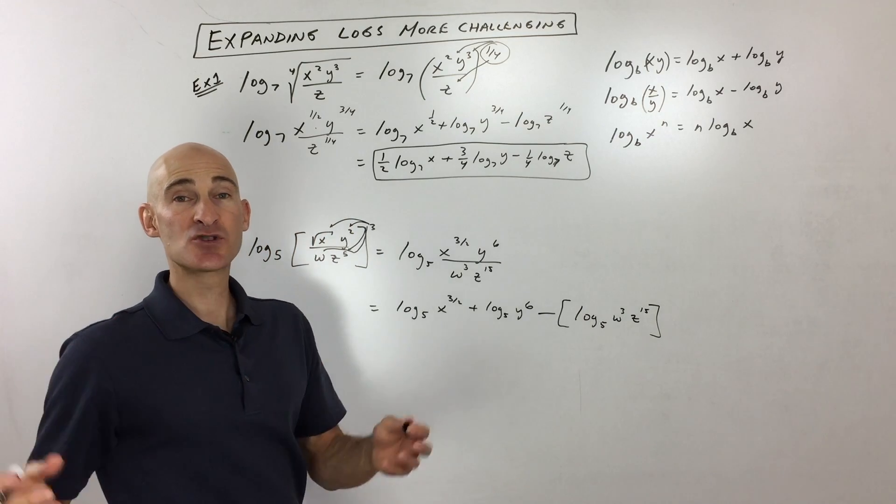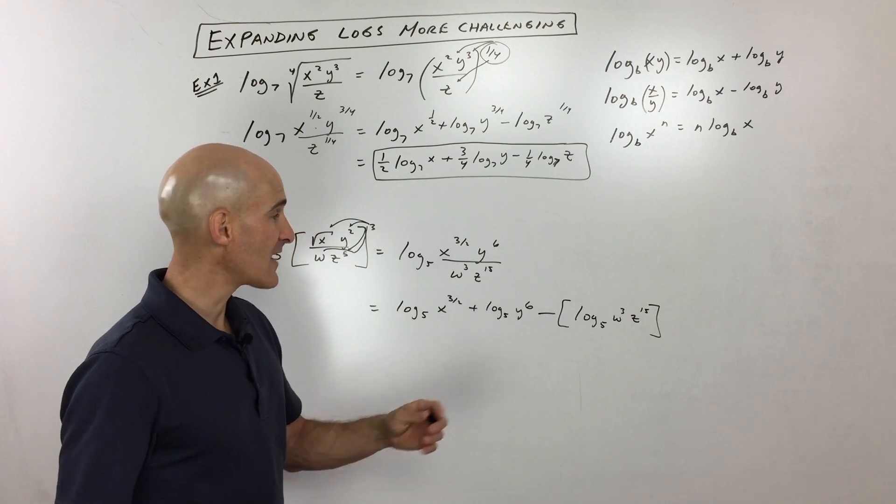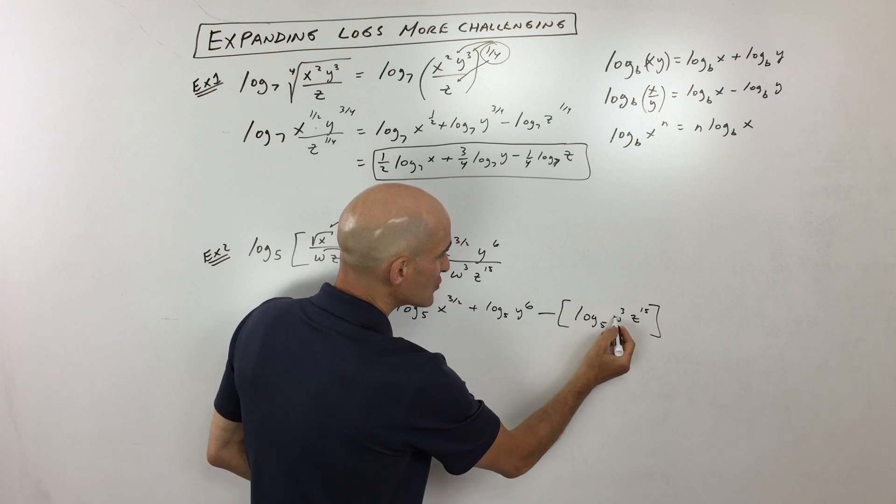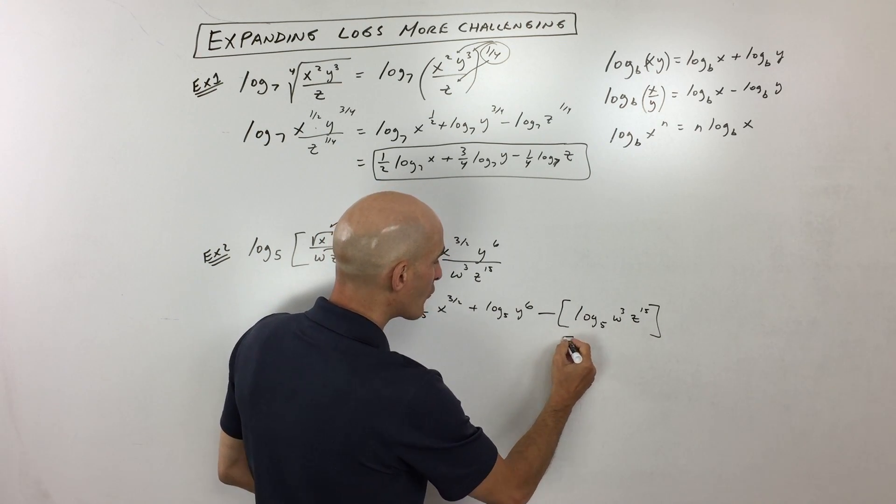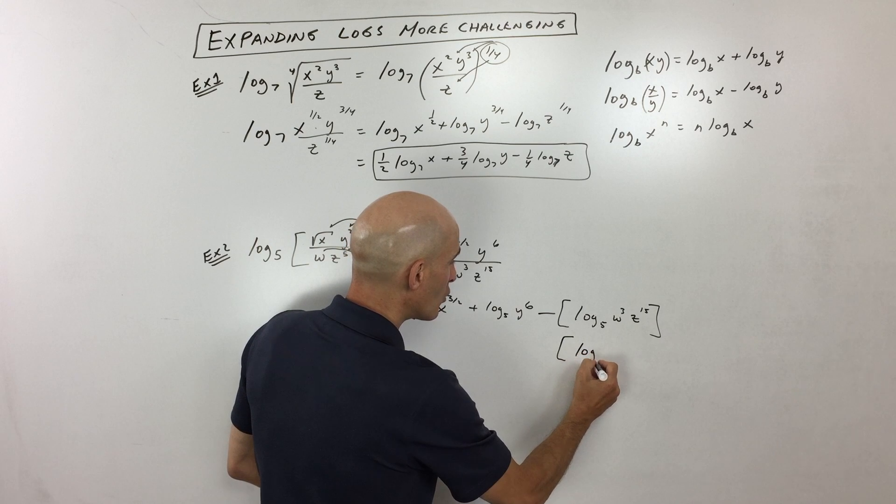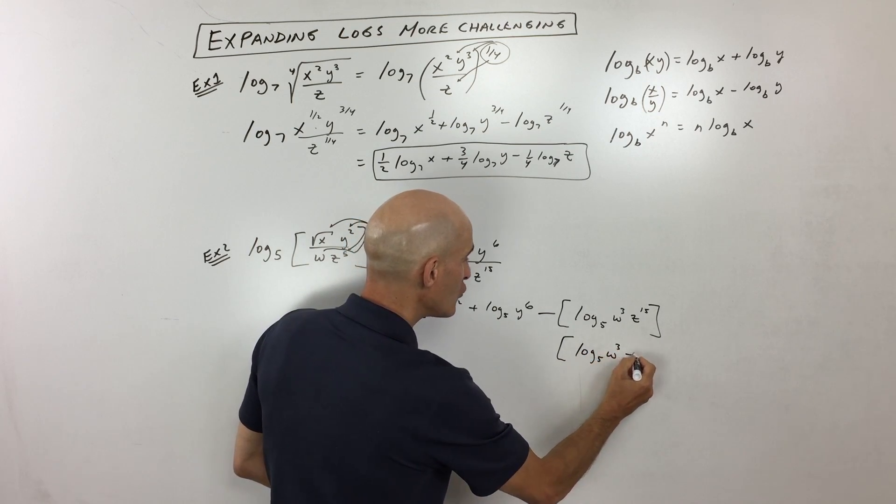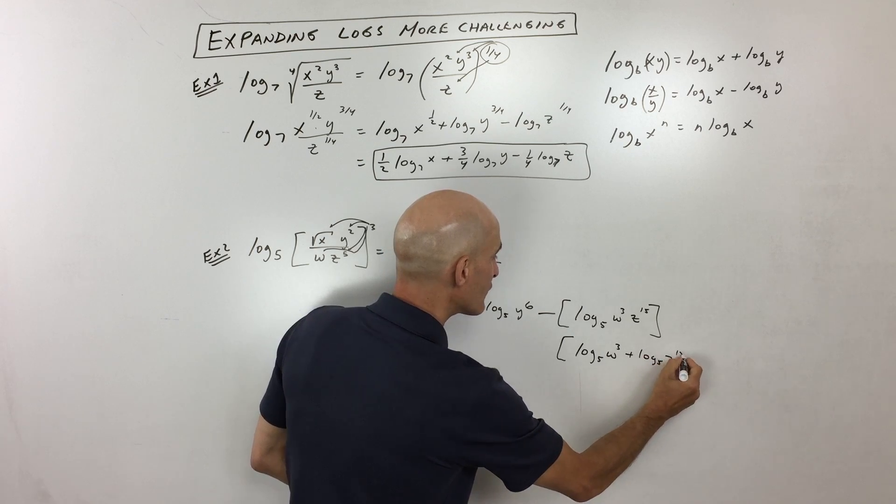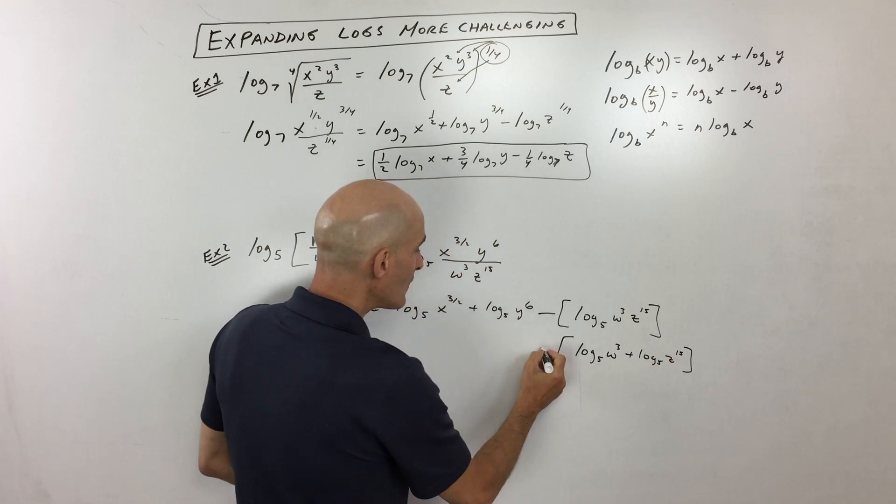So now you can do this, some students are really good. They can do this all in one step, but I'm just showing you step by step. Now notice how these are multiplied together, these two quantities right here. So that means that we can write this as a sum. So log base five of w cubed plus log base five of z to the fifteenth.